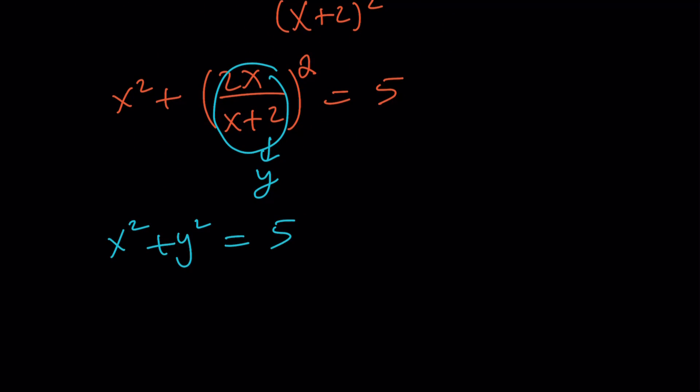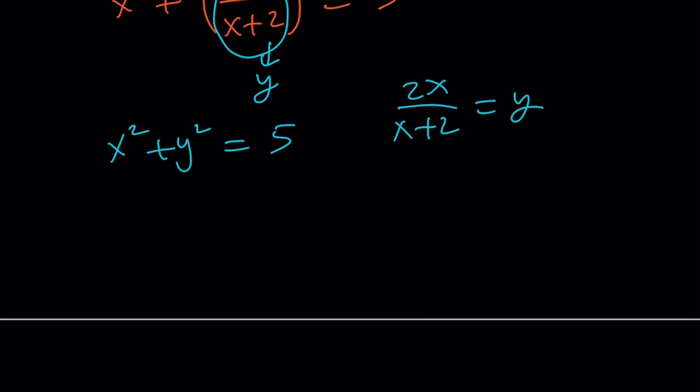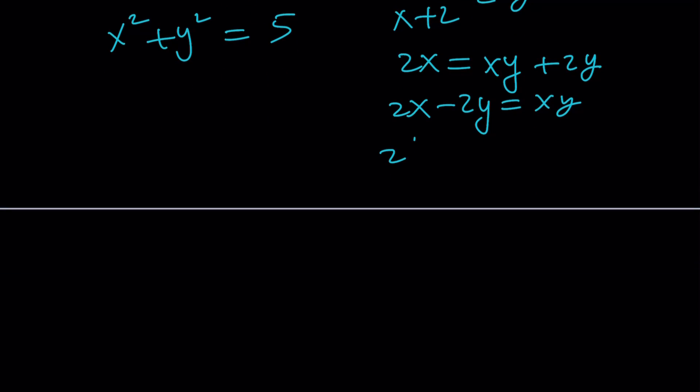Now, from here we also get sum of two squares: x² + y² = 5, but the other equation gives us something else. Let's set it equal to y. This is different because now we're dealing with variable algebraic expressions, xy + 2y. And then I want to put the 2x and 2y together.